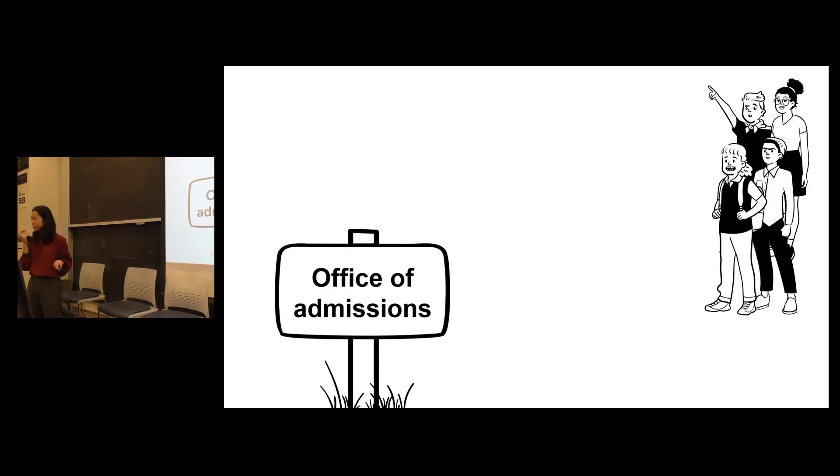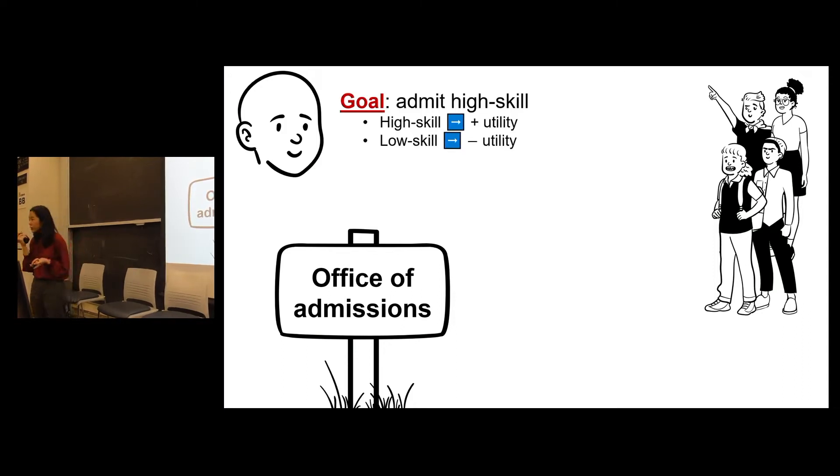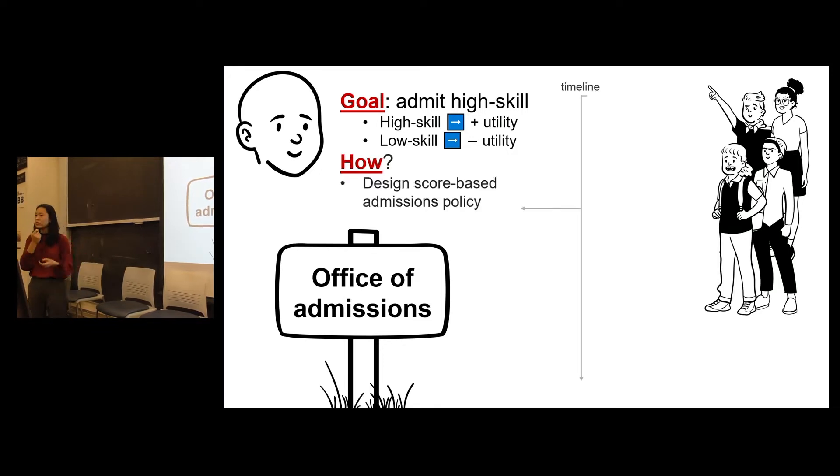Let's think about a screening scenario. You are an admissions officer at a school. Admitting high-skill students will give you positive utility, so you want to admit high-skill students. The way that you do it as the uninformed party is that you fix a test and then you design a score-based admissions policy. After seeing your score-based admissions policy, the students will then decide the amount of effort they want to put into preparing and studying for this exam.